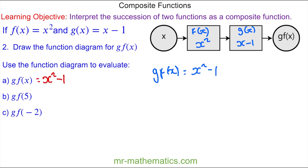For question b, you can see that x is now 5. We're going to substitute this value of 5 in place of x. So g f of 5 equals 5 squared minus 1. 5 squared is 25, take away 1 is 24.